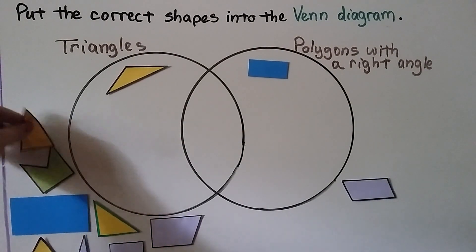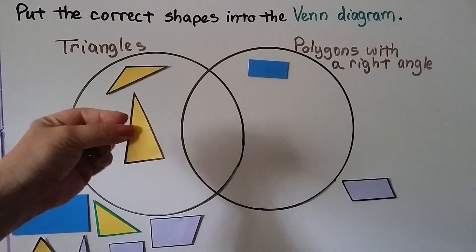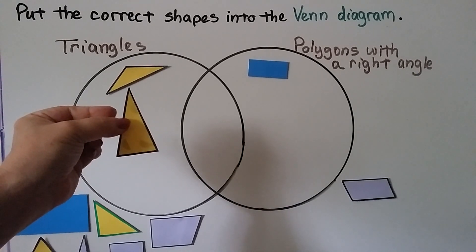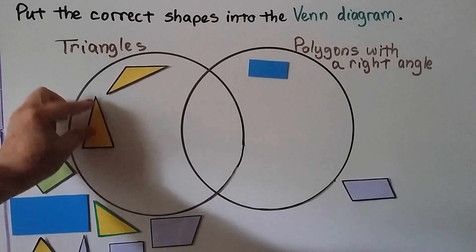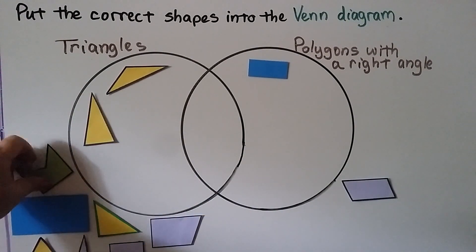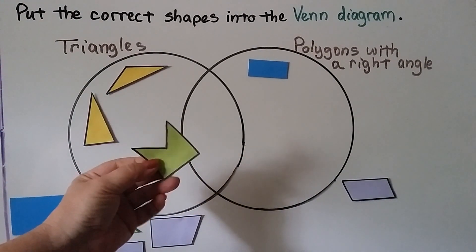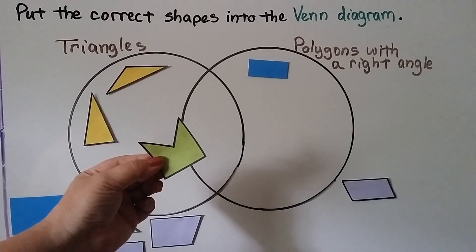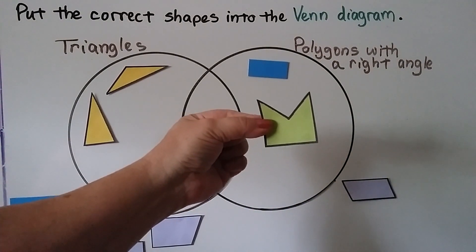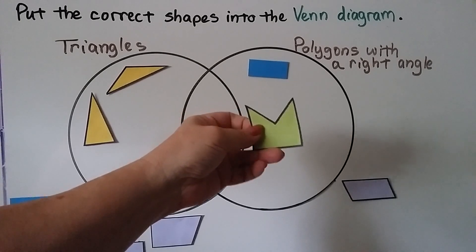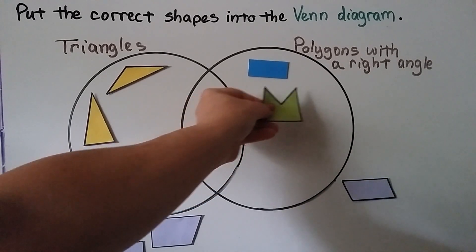What about this one? Here's a triangle. Does it have any right angles? No. So we're going to put it with the triangles. What about this shape? That's not a triangle. Does it have any right angles? Yes, it has one here and one here on the bottom. So we can put it in the polygons with a right angle circle.